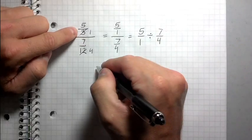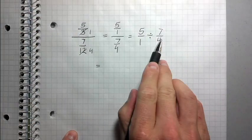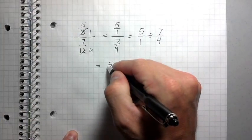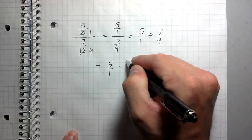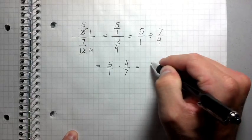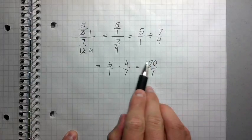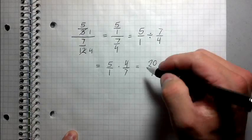Which remember when I rewrite it as a multiplication problem by inverting and multiplying, I get five over one times four over seven. Multiply straight across and I get 20 over sevenths. Five times four is 20. One times seven is seven.